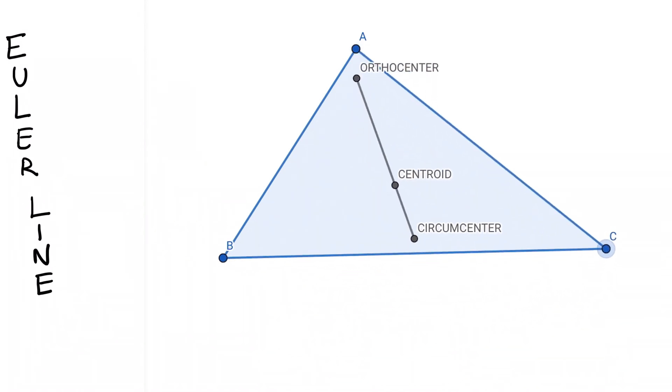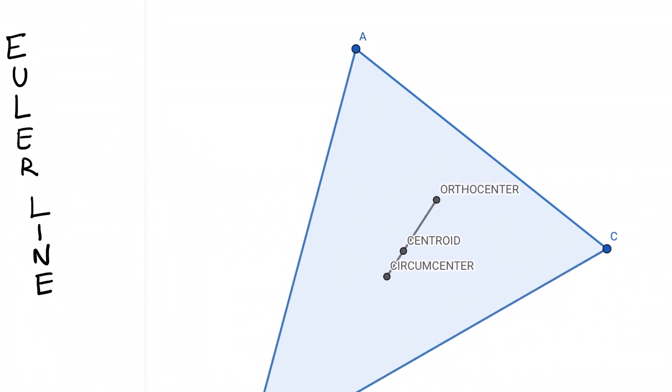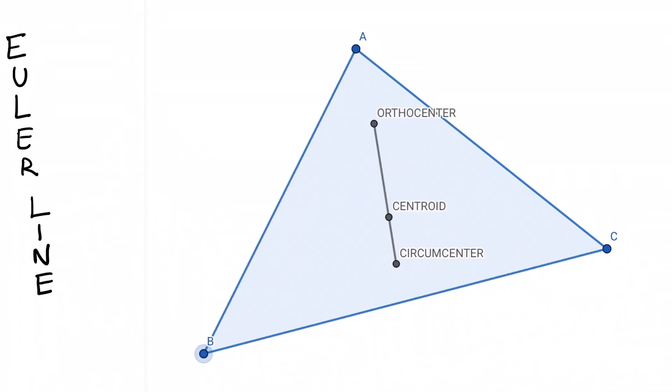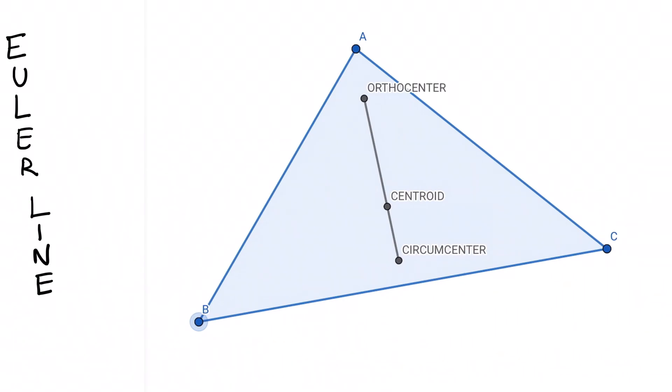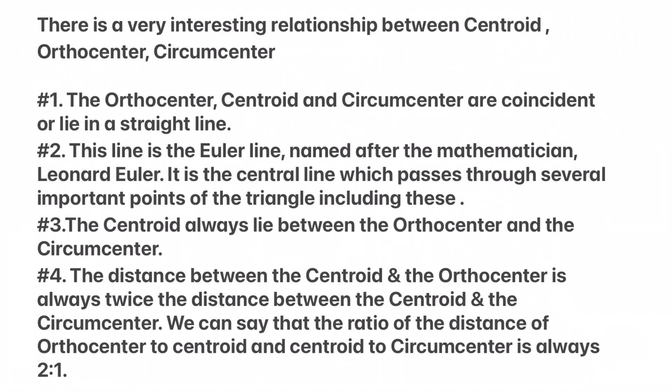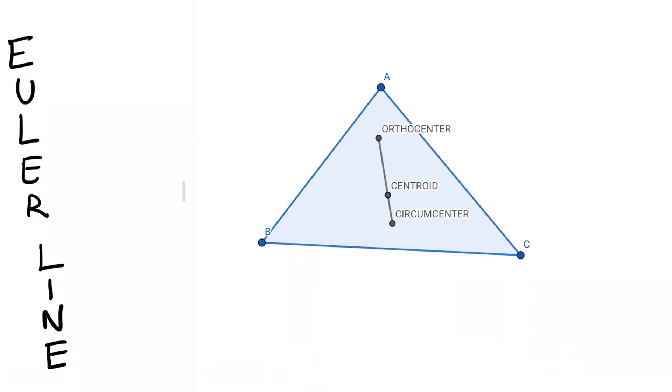We see that the centroid is between the orthocenter and circumcenter. The distance between the centroid and the orthocenter is double the distance between centroid and circumcenter, so the ratio is 2:1 always.